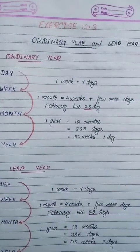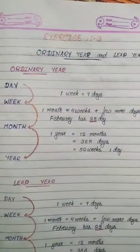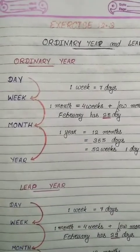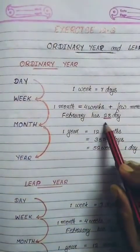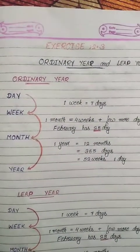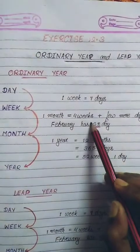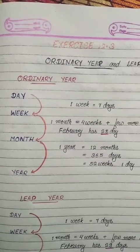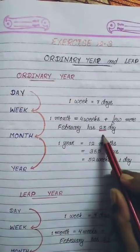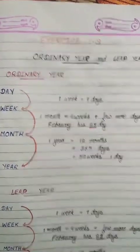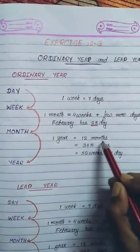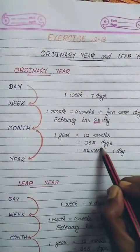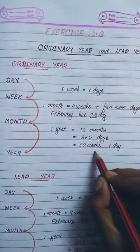In four weeks there are 28 days. In one month there are 30 or 31 days, except February which has 28 days. Therefore in one month there are four weeks plus two or three days. In ordinary years, February has 28 days. One year equals 12 months, or 365 days — that is 52 weeks and one day.